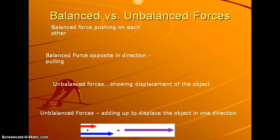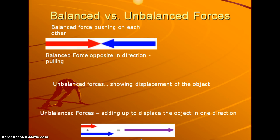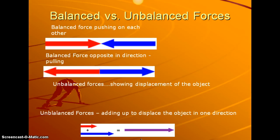So here's some examples. A balanced force pushing on each other. Notice the arrows are equal in size, opposite in direction. A balanced force of opposite in direction, the pulling force. So these are equal in size, opposite in direction again. So the top one up there could be like pushing against a wall. Bottom one would be pulling against somebody in a tug of war maybe.